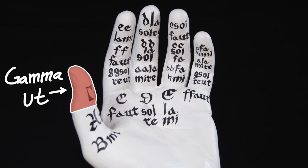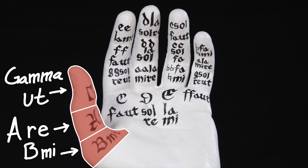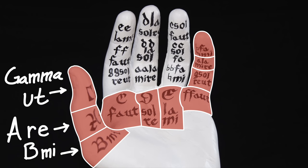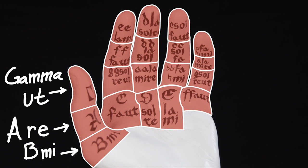Beginning on the thumb of the left hand, you would start with the lowest note, Gamma Ut, then going down the joints of the thumb A Re, and B Mi. The rest of the notes followed a spiral pattern around the hand, going up the pinky, across the fingers, and then circling back around.